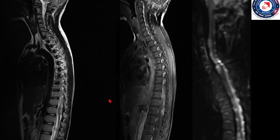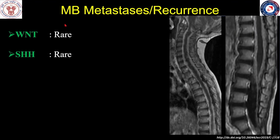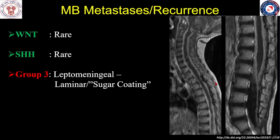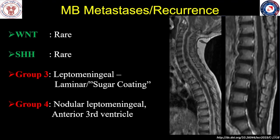Unlike the primary neoplasms which seldom enhance, the leptomeningeal metastases tend to enhance avidly. Metastases are quite rare with wingless and SHH subgroups of medulloblastomas. However, they are quite frequently associated with Group 3 medulloblastomas, which can show linear enhancement along the length of the spinal cord extending down the cauda equina nerve roots, giving a sugar-coating or laminar appearance. Group 4 medulloblastomas can present with nodular leptomeningeal metastases or deposits involving the anterior third ventricle or the suprasellar cistern.